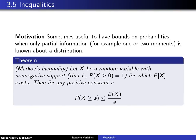The fifth and final section in this chapter on random variables concerns inequalities. There are two inequalities that are going to be considered here. The first is Markov's inequality and the second is Chebyshev's inequality. These are not the only two inequalities in probability theory — there are Jensen's inequality and others — but we will just cover these two because they are two of the most well known.